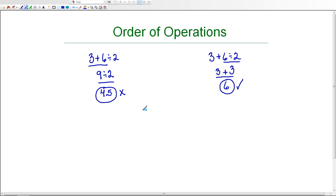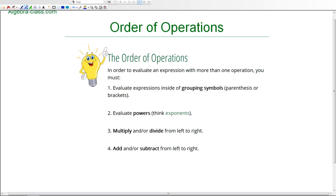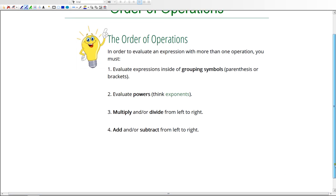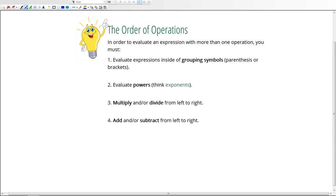The order of operations is going to help us to make sure that we follow a set of rules in order to evaluate our expressions correctly, so that we arrive at the right answer. Because, as you can see, there are multiple ways to solve this or to evaluate this expression, and we can arrive at an incorrect answer if we don't follow the order of operations. So, the order of operations is simply a set of rules that we need to follow when we're evaluating an expression that has more than one operation.